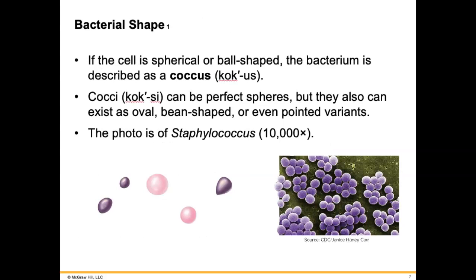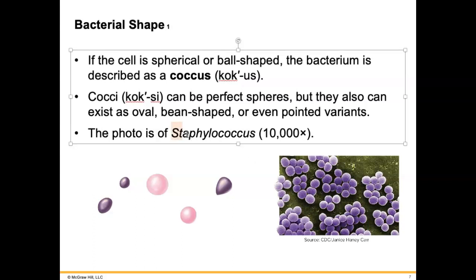If the cell is spherical or ball-shaped, the bacterium is described as a coccus, or cocci in the plural. Cocci can be perfect spheres, but they can also exist as oval, bean-shaped, or even pointed variants. The picture of the purple bacteria shown is actually Staphylococcus — you can see it's clustered up in a staphylo arrangement, which usually looks like clusters of grapes. When we say Staphylococcus, that describes clusters of cocci.